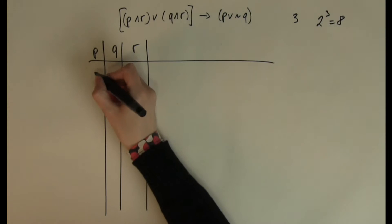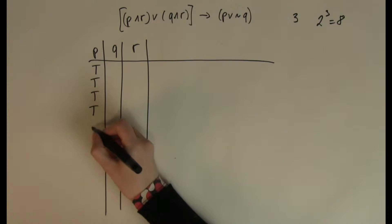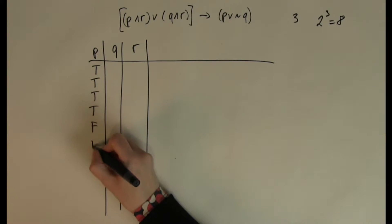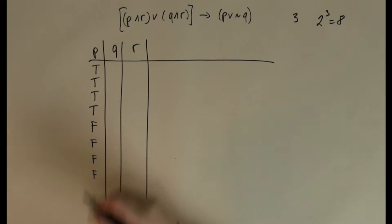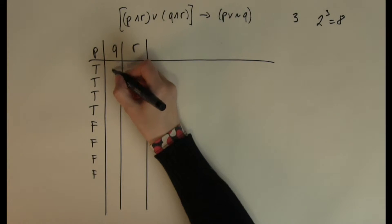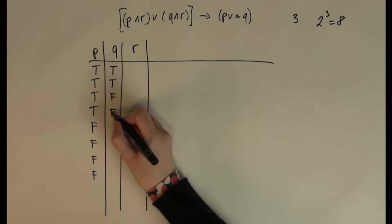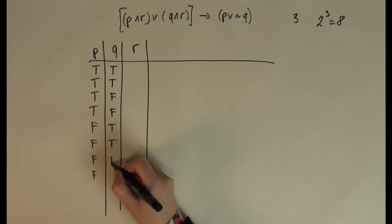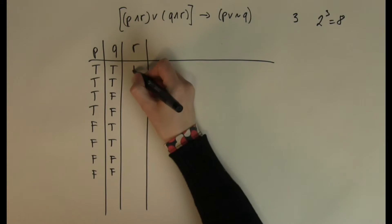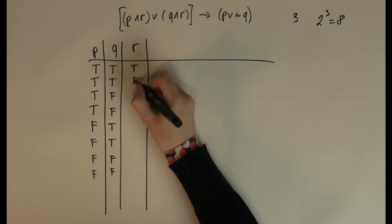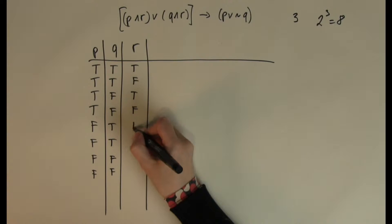Half of eight is four, so I am going to start with four trues and then four falses. Then half of four is two, so I am going to have two trues and two falses until I fill up the table. Then just use true, false, true, false to fill in the last column.